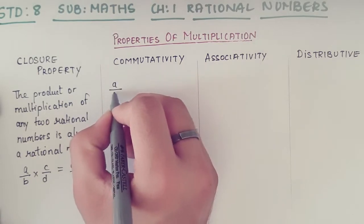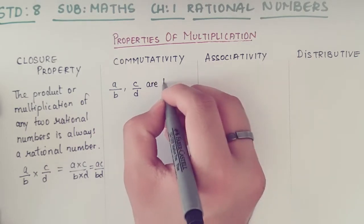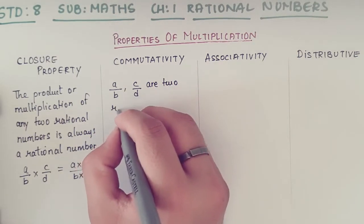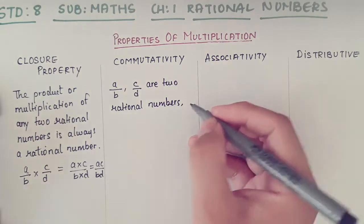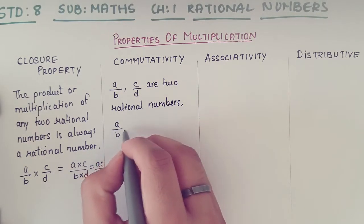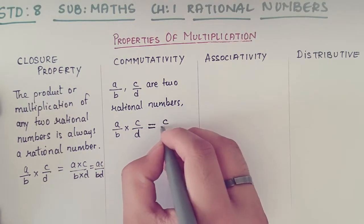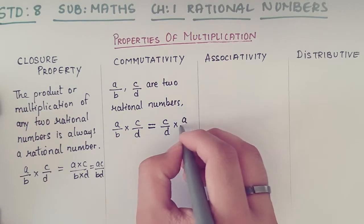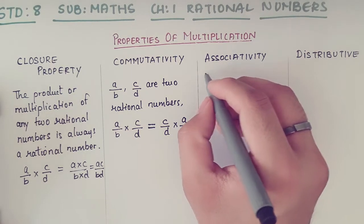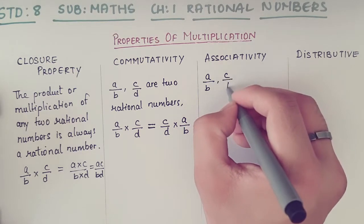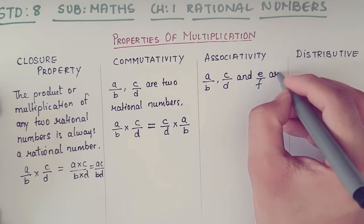Now, commutativity: where a/b and c/d are two rational numbers, under commutativity a/b multiplied by c/d is going to remain the same as c/d multiplied by a/b.